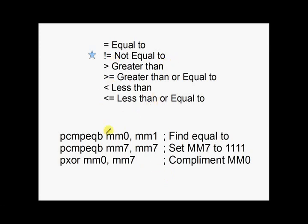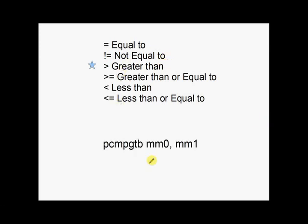Okay. Not equal to. This is literally find equals to and then complement it. So packed compare for equality. MM0 and MM1, finds equals to. And then, this is the complementing trick from a few slides back. We set MM7 to all ones and packed exclusive or MM0 with this value to give us the complement of equals to or not equals to, in other words.